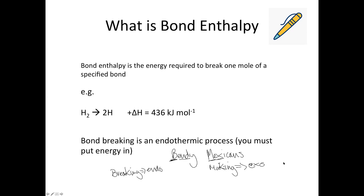To break a bond you put energy in — think of it like karate chopping it in half. When you make a bond you get energy back out, because the substances are becoming more stable. Anything that's more stable tends to have lower potential energy, so you get energy out in that respect.